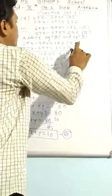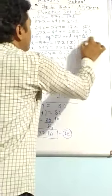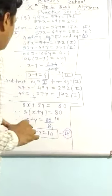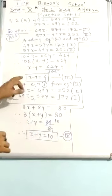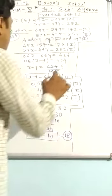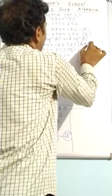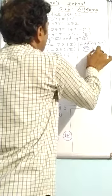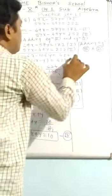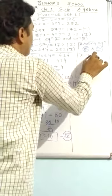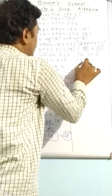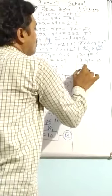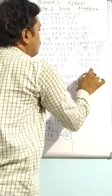Now adding equation 3 and equation 4: x minus y equal to 4, and x plus y equal to 10. Adding these gives 2x equal to 14, so x equal to 7.